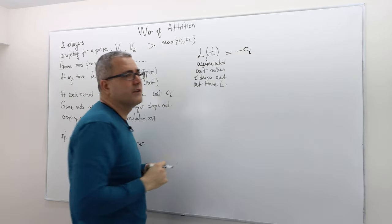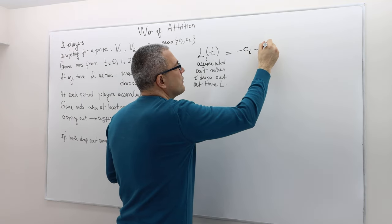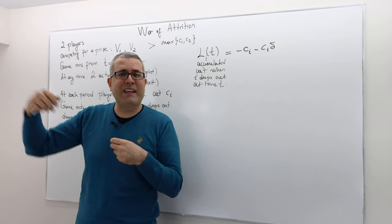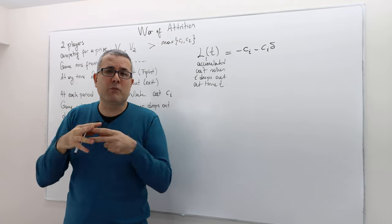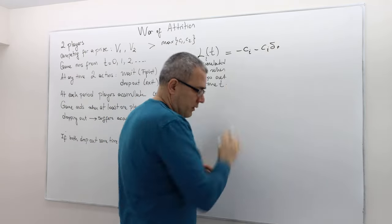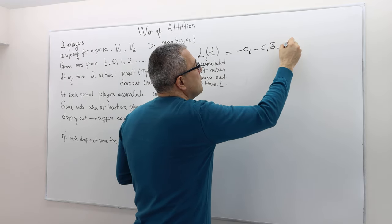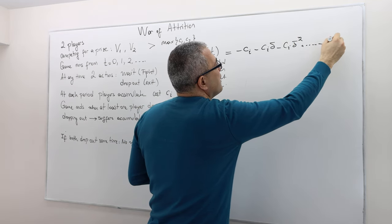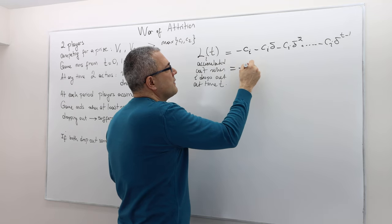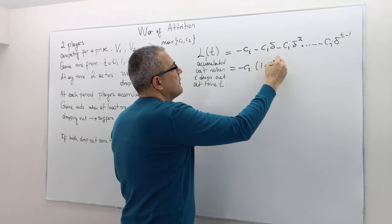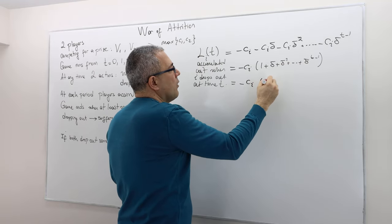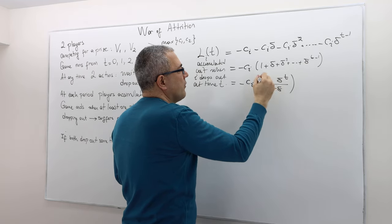In period 0, player i is going to suffer minus C_i. In period 1, he suffers C_i again but discounted by delta. The reason we discount is because this is potentially an infinite horizon game, and without discounting the total payoff could be minus infinity, which is not well-defined — so we discount to bound the payoffs. Continuing, in period 2 you get delta squared times C_i, all the way to period T minus 1. In period T, because you're dropping out, you don't suffer any cost. So L_i(T) is minus C_i times the sum (1 + delta + delta² + ... + delta^(T−1)), which equals minus C_i times (1 − delta^T) / (1 − delta).